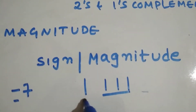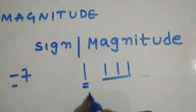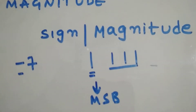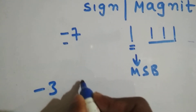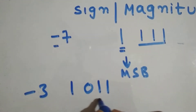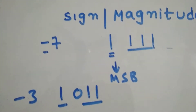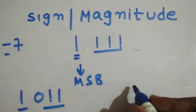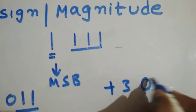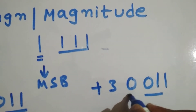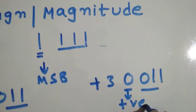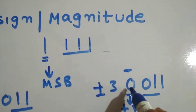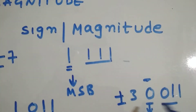So minus 7 in signed magnitude is 1 1 1 1. For minus 3, it would be 1 0 1 1 — where this is the magnitude and this is the sign bit. If you want to write plus 3, don't forget to add a 0 in front, because it's not a 3-bit number, it's 4-bit. This is an important point — in exams, if you don't add the extra sign bit for signed magnitude form, your answer will be wrong.